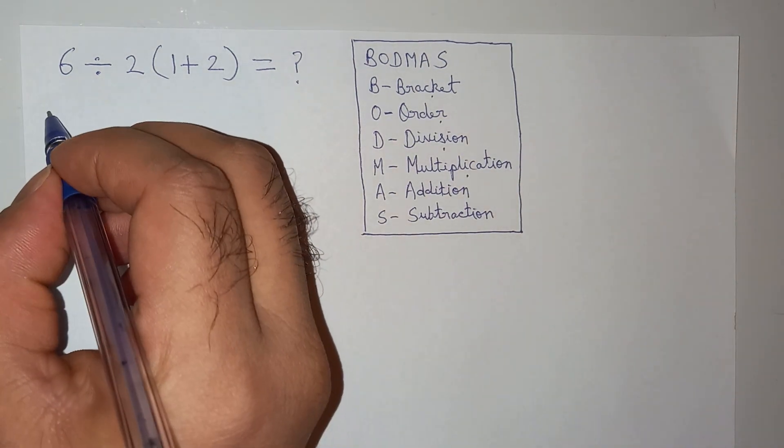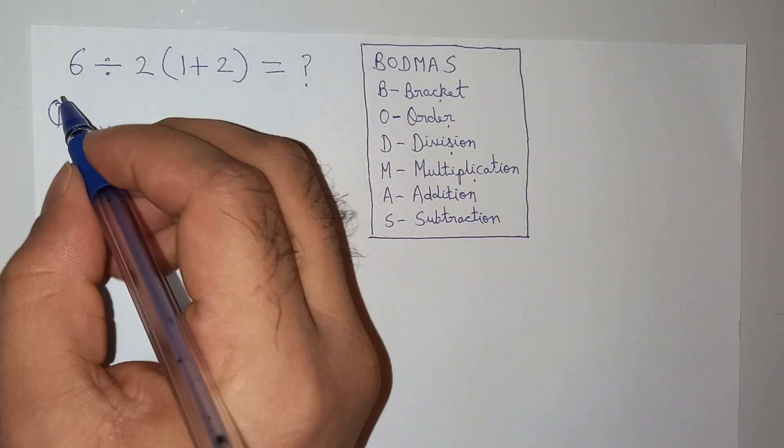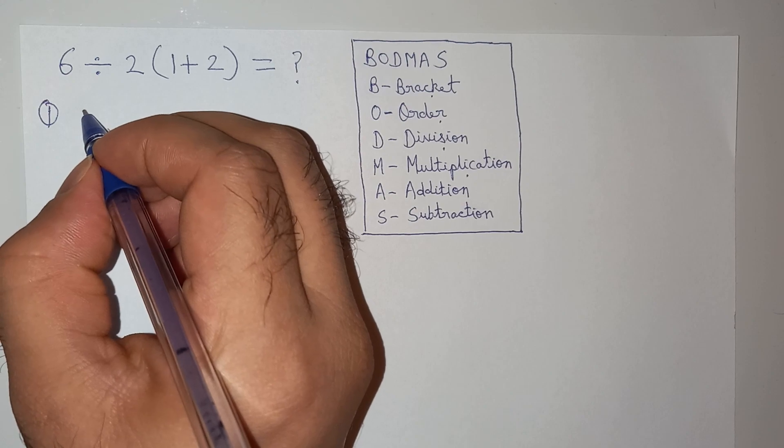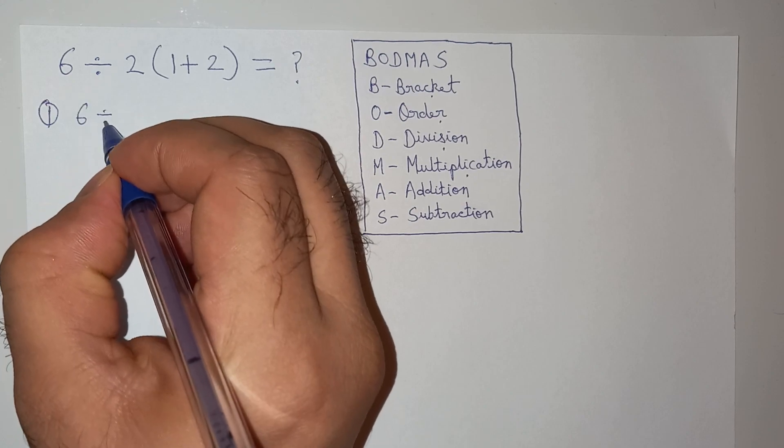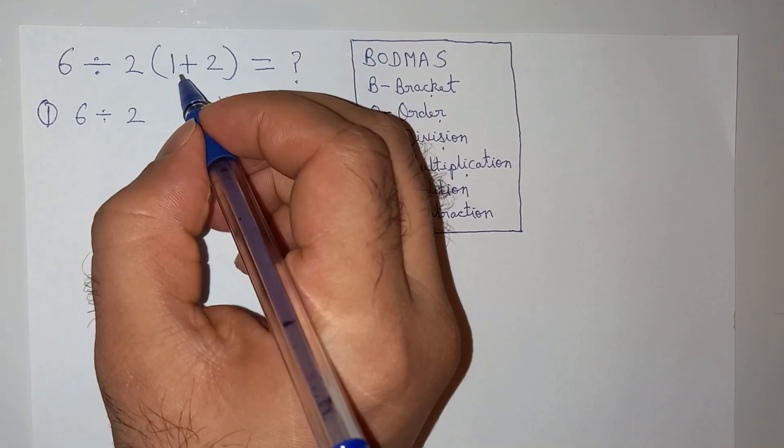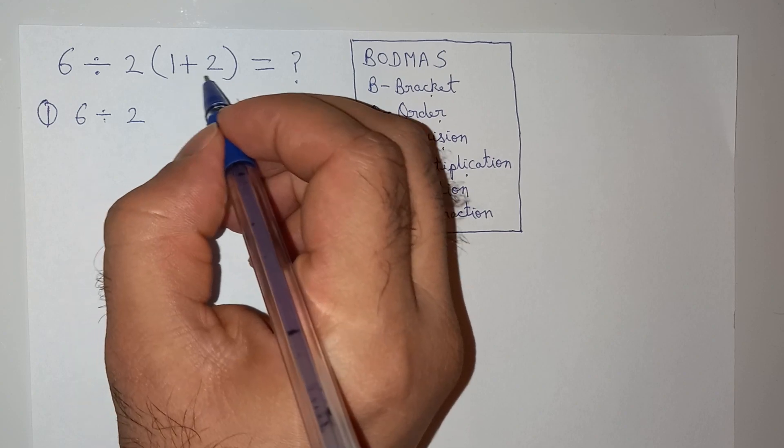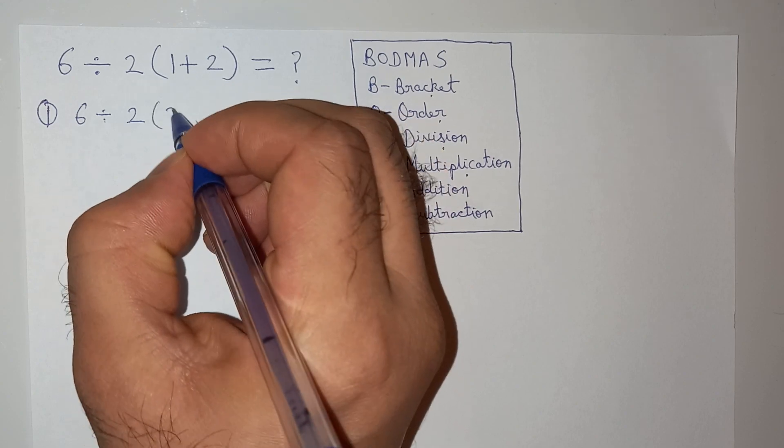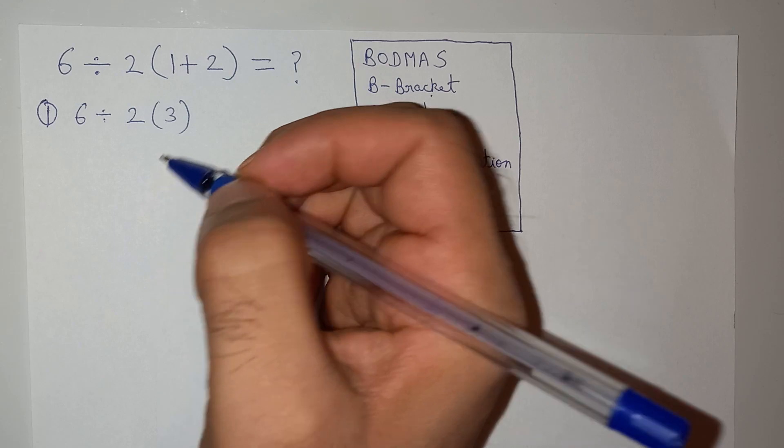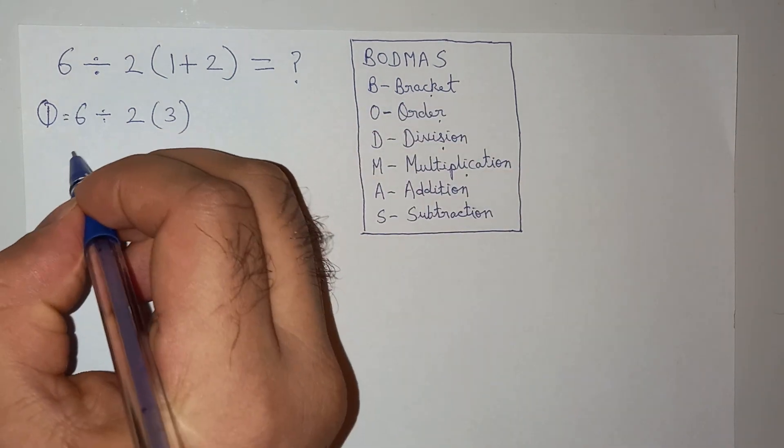The first way to solve this question is we can write this as 6 ÷ 2, and we will solve the bracket first. So 1 + 2 = 3.